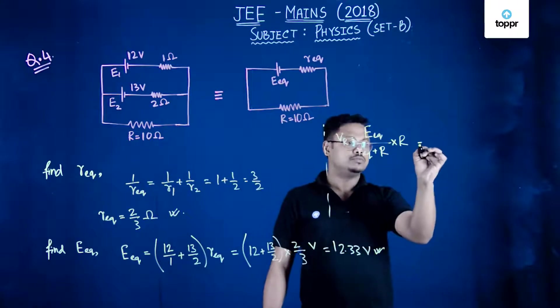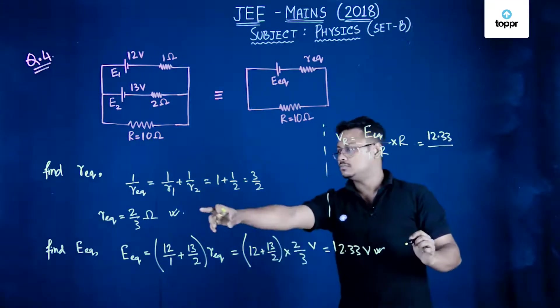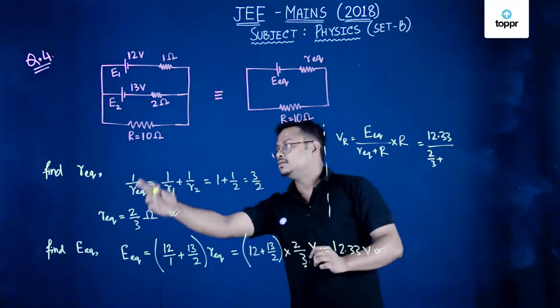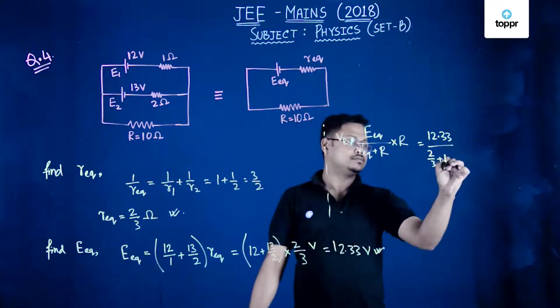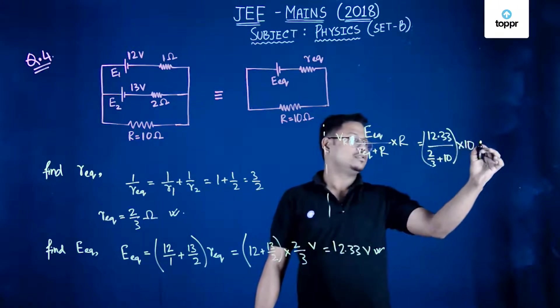If you just put the value, that is 12.33 upon 2 by 3 plus the value of R is 10, into 10 volt.